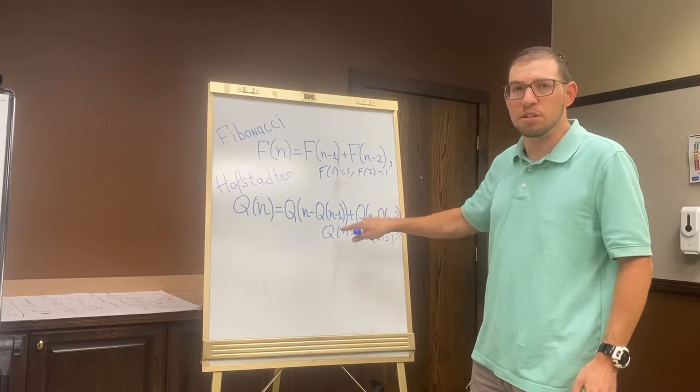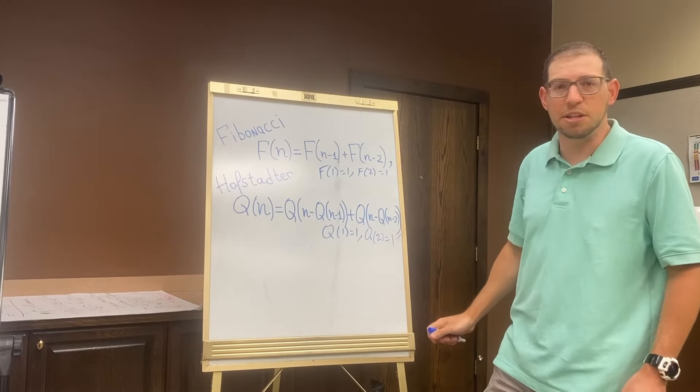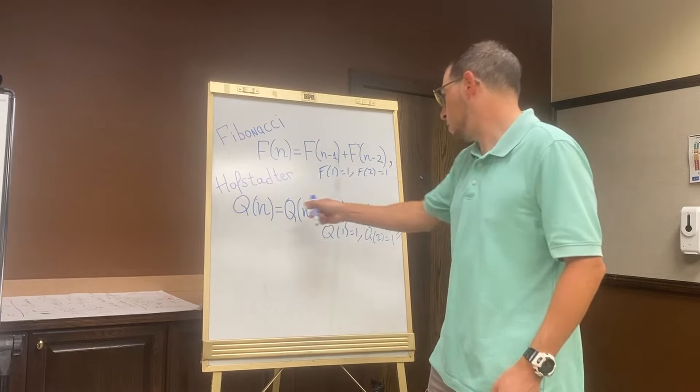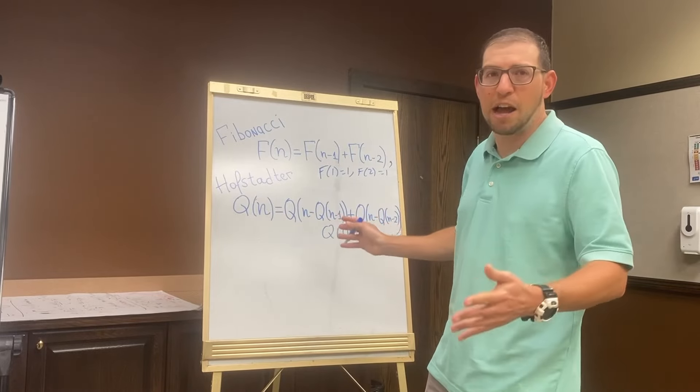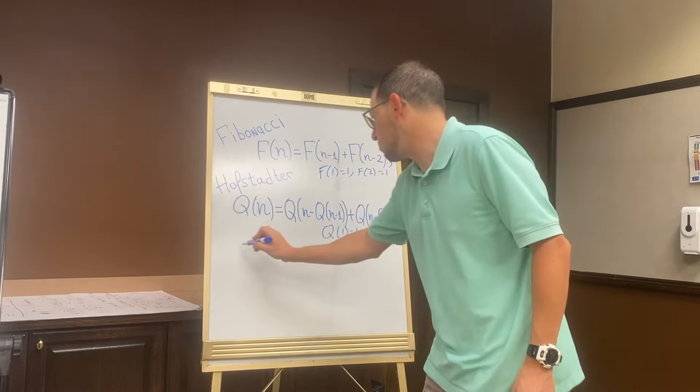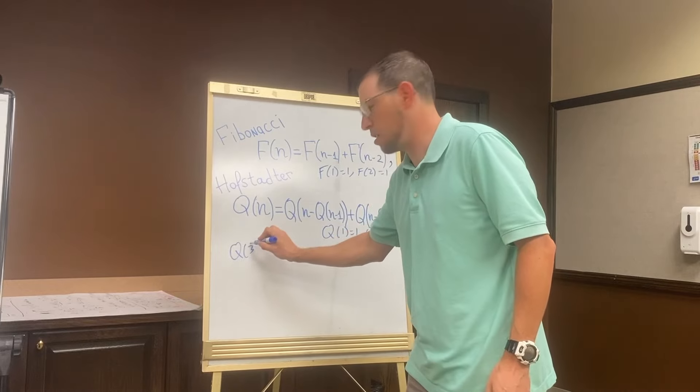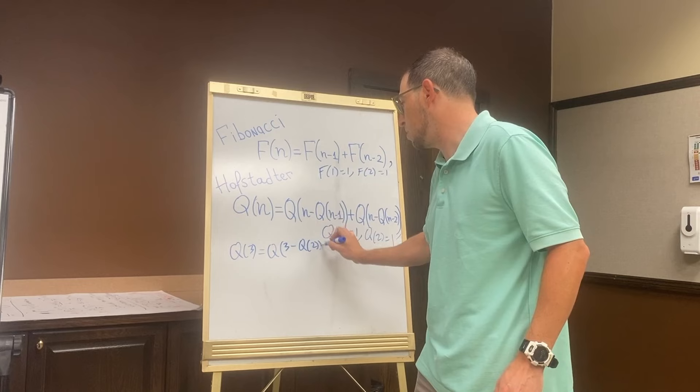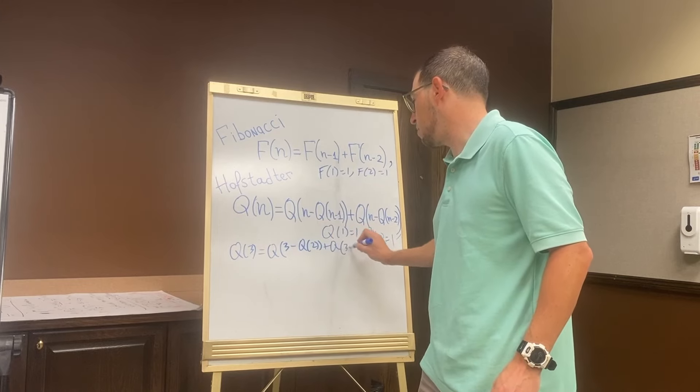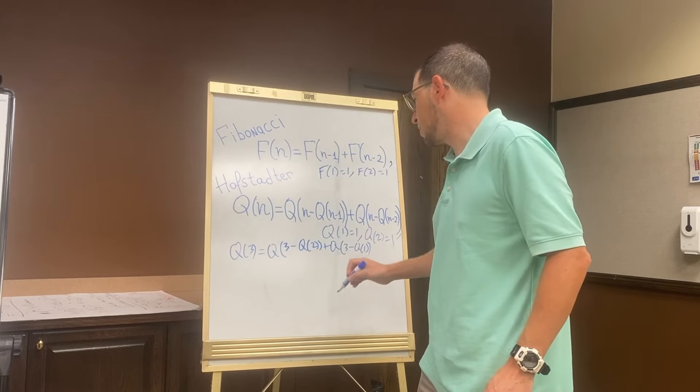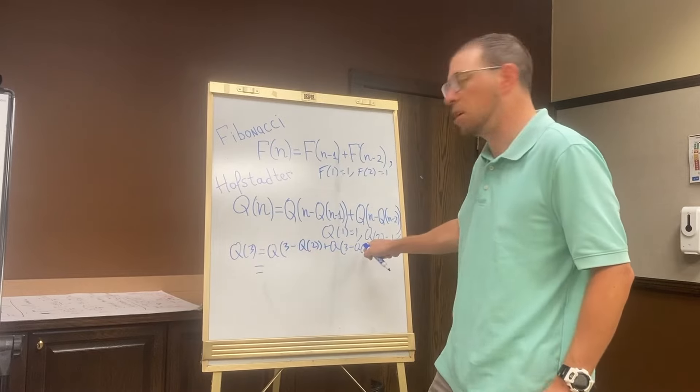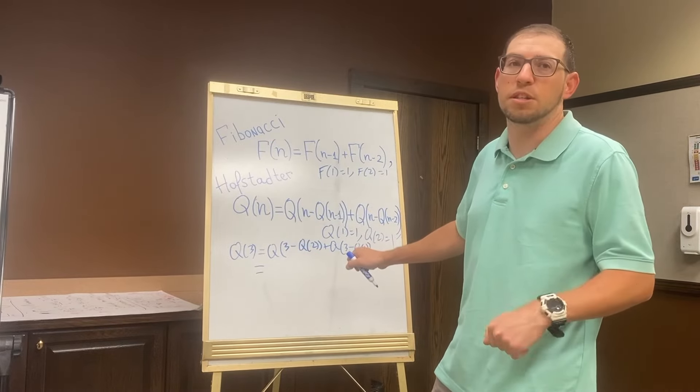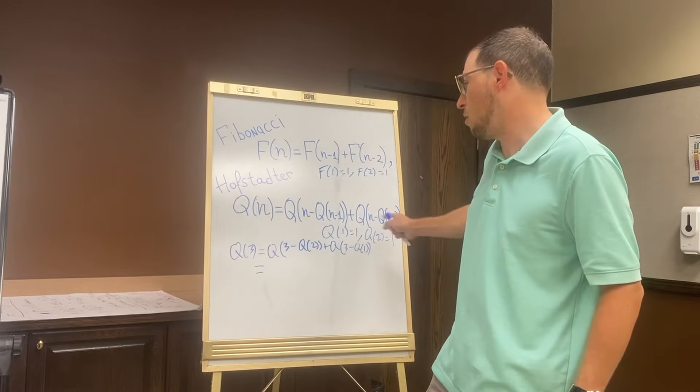Just like Fibonacci, we start with 1, 1 as our initial conditions, and to work with a recurrence like this, you just have to write it down and expand everything out. If we want to know what Q(3) is, this is Q(3 - Q(2)) + Q(3 - Q(1)). Then Q(2) and Q(1) are earlier terms in the sequence that we already know—in this case, they're our initial conditions.